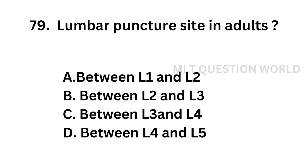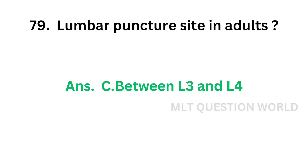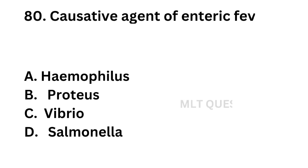Question number 79: Lumbar puncture site in adults — Option A: between L1 and L2, Option B: between L2 and L3, Option C: between L3 and L4, Option D: between L4 and L5. Lumbar puncture site in adults is between L3 and L4 lumbar vertebrae.